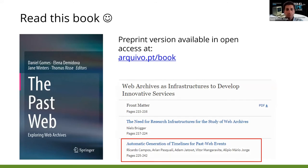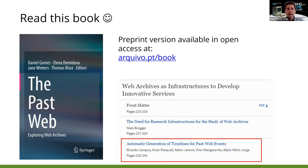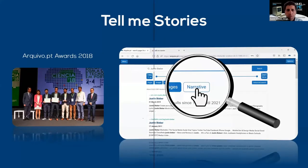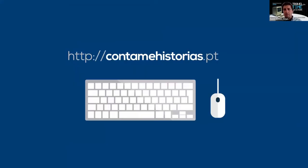There are also some videos available in English. We also have a book about the past web with several interesting research use cases, including a chapter on work done by Ricardo Campos. A pre-print version is freely available at Archivo.pt/book, so you can look at that before deciding to buy the book.